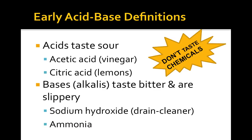Historically, the first definitions for acids and bases were based on how these substances tasted. Acids have sour tastes. Acetic acid is the acid found in common vinegar, and citric acid is found in citrus fruits like lemons, limes, and oranges. Bases, on the other hand, are bitter tasting and tend to be slippery feeling. Sodium hydroxide is the base found under many kitchen and bathroom sinks because it's the active ingredient in drain cleaner. Ammonia is another base used in household cleaning when dissolved in water.